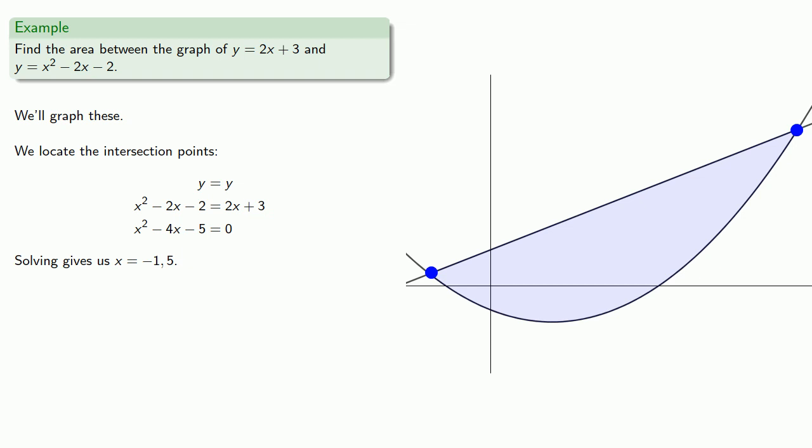Thanks to our handy time machine, we know we only need to worry about the x-values, so we don't actually need the y-coordinates and won't compute them. But remember: if it's not written down, it didn't happen. Let's label the beginning and ending with those x-values.